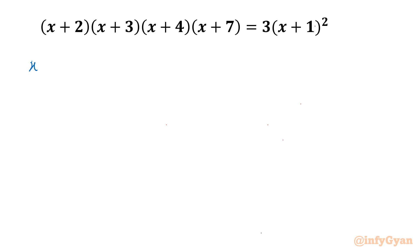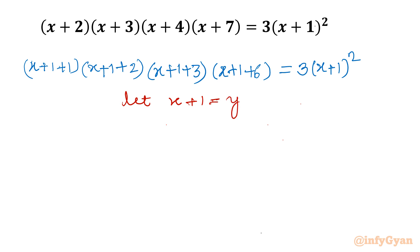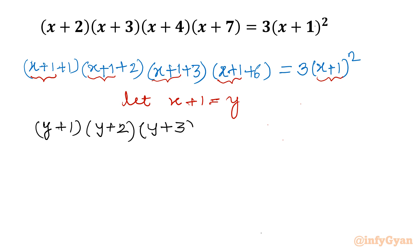Let's rewrite each bracket by factoring out (x+1). The first bracket becomes (x+1)+1, the second becomes (x+1)+2, the third becomes (x+1)+3, and the fourth becomes (x+1)+6. The right-hand side remains 3(x+1)². Now I will use substitution: let x+1 = y, so we can rewrite the entire equation in terms of y as (y+1)(y+2)(y+3)(y+6) = 3y².